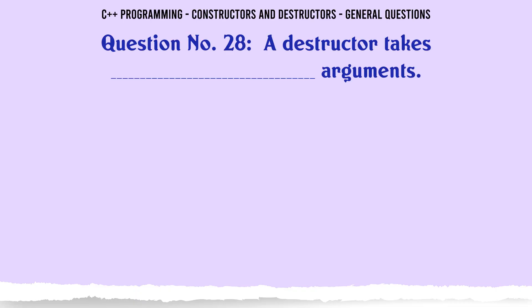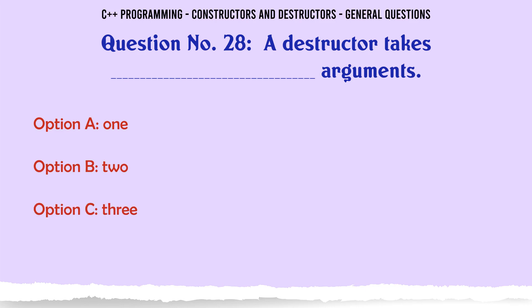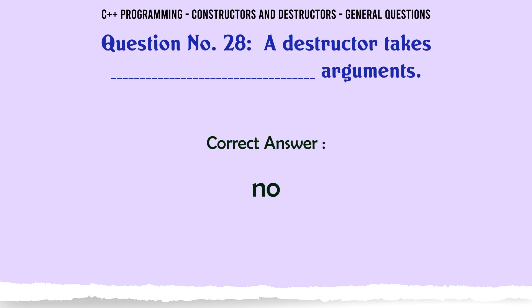A destructor takes how many arguments? A. 1. B. 2. C. 3. D. No arguments. The correct answer is No arguments.